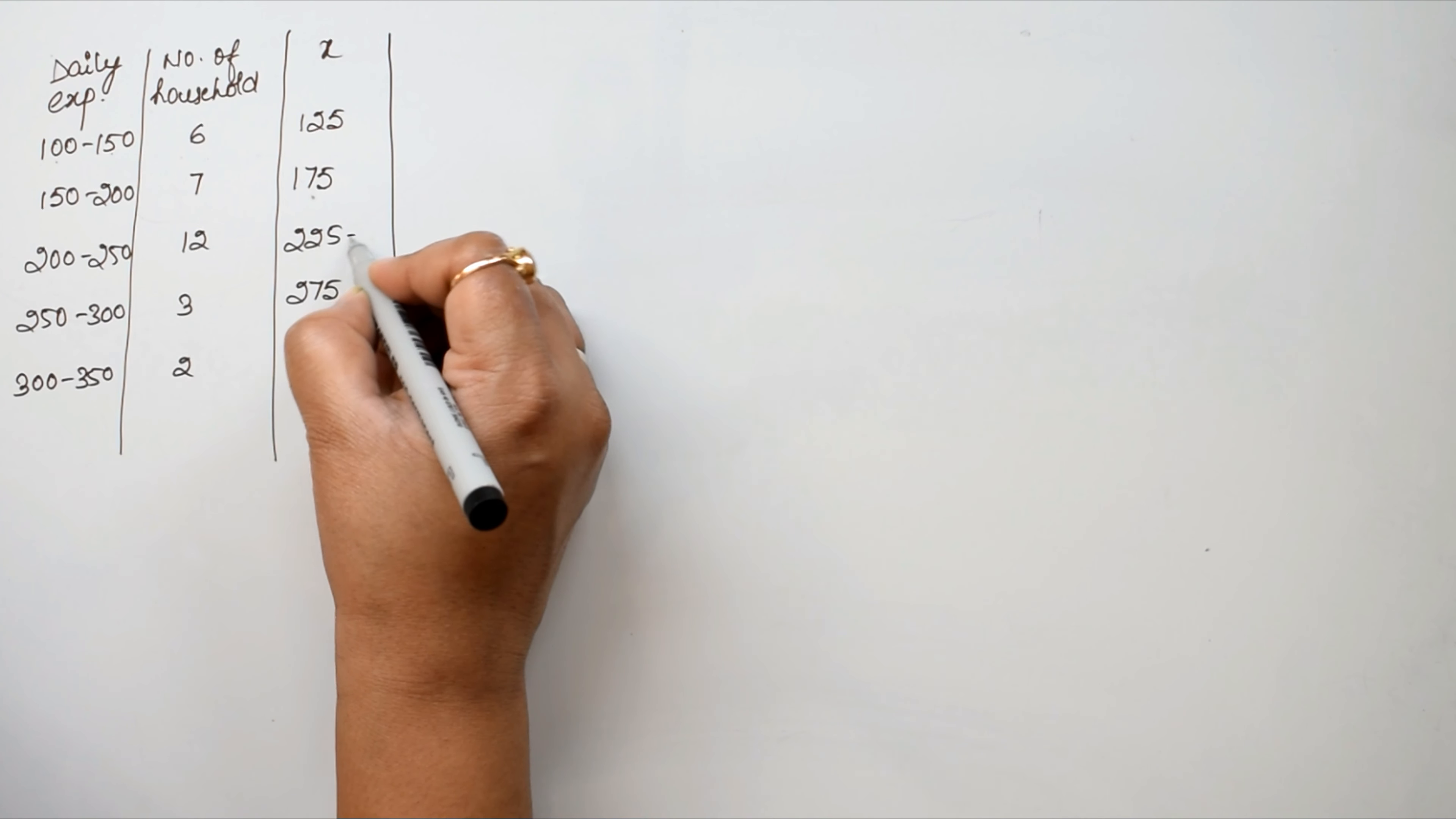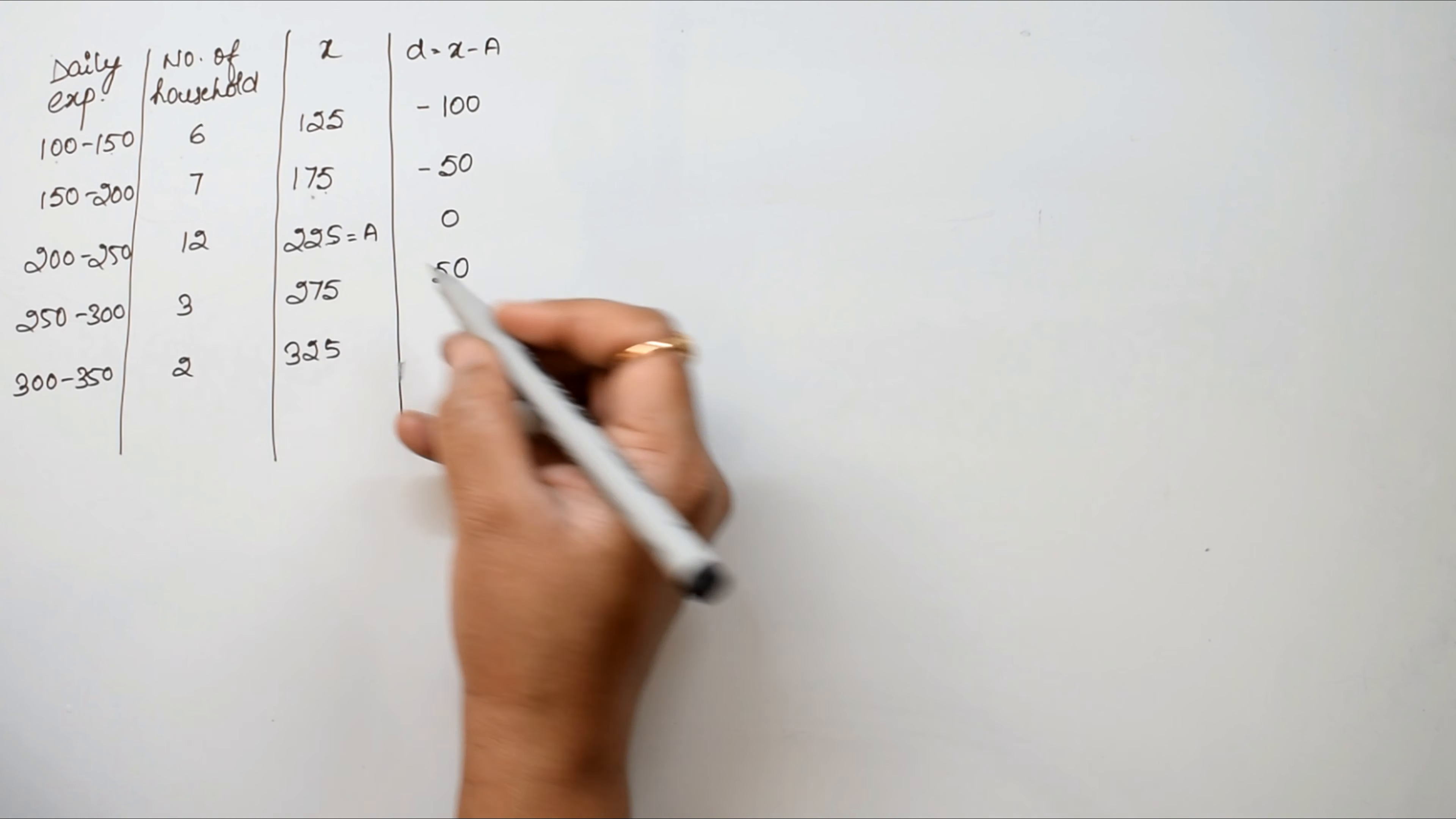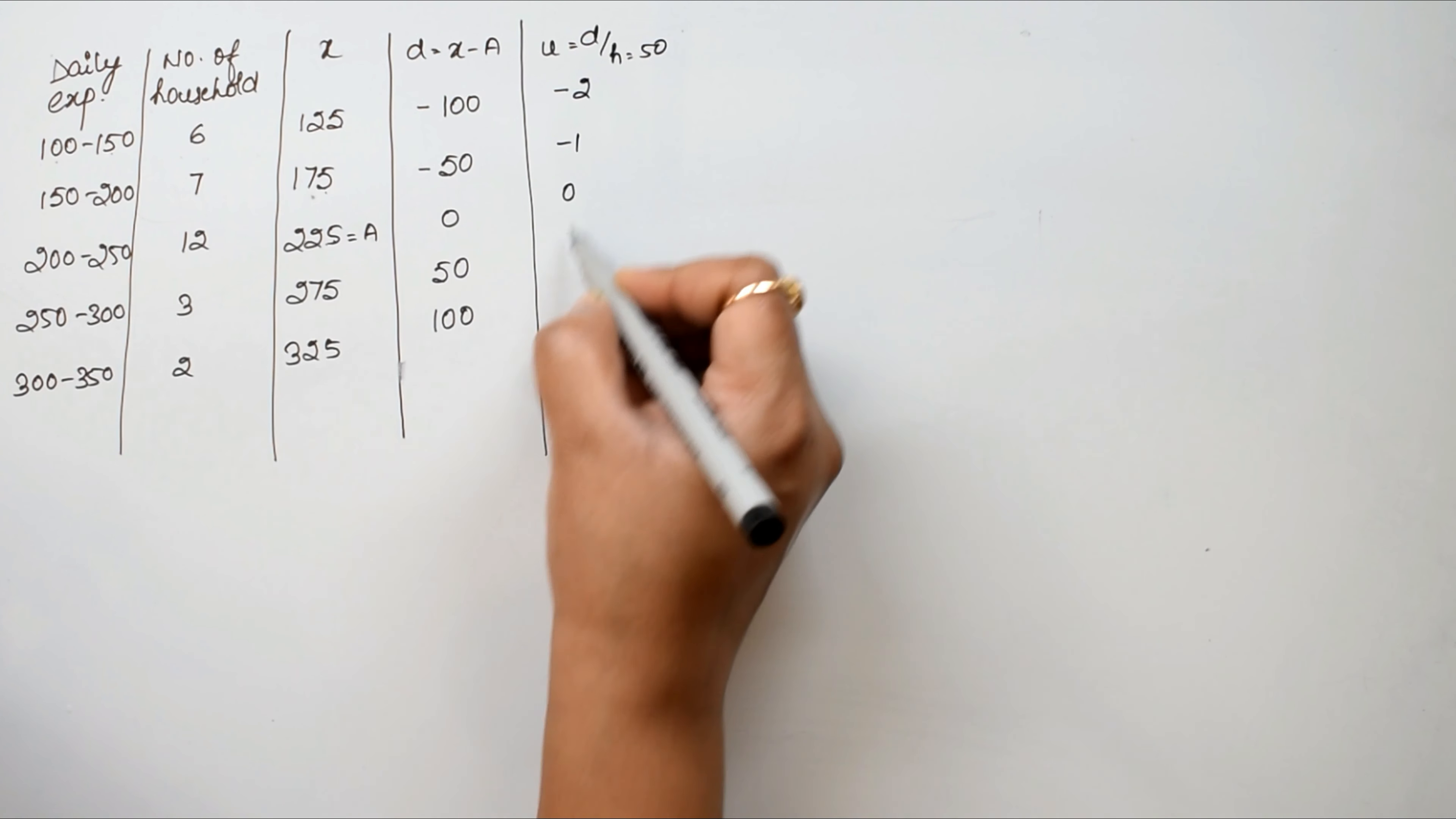Now these are very big values, so we'll use step deviation method. Taking assumed mean A as 225, we calculate u_i = (x_i - A)/h. This gives us: minus 100, minus 50, 0, 50, and 100. We can see 50 is common, so h equals 50. Dividing by 50, we get u as: minus 2, minus 1, 0, 1, and 2.